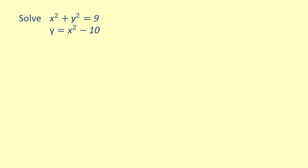Let's take a look at another example. We have a system of equations where the first equation is x squared plus y squared equals nine — this is a circle. The second equation is y equals x squared minus ten, which is a parabola. Let's start by solving for x squared. Adding ten to each side of the second equation gives us x squared equals y plus ten. Substituting y plus ten into the first equation and rewriting in descending powers by subtracting nine from both sides gives us y squared plus y plus one equals zero. This polynomial is not easily factorable.